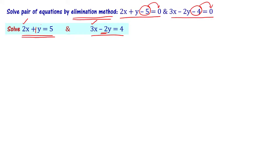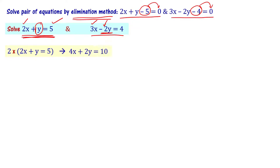The y coefficient in the first equation is 1 and in the second equation is 2. So we multiply the first equation by 2: 2 into 2x plus y equal to 5 gives us 4x plus 2y equal to 10. The second equation remains 3x minus 2y equal to 4.